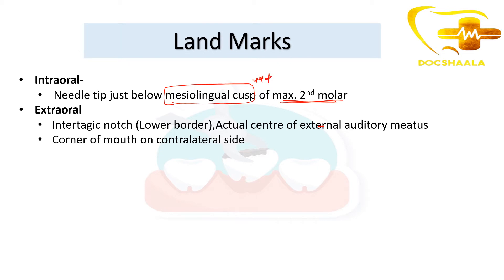Extraorally, the main landmark is the intertragic notch, which corresponds to the external auditory meatus. Since it is covered by the tragus, we take the lower border of the intertragic notch as the extraoral landmark. Another landmark is the corner of the mouth on the contralateral side.